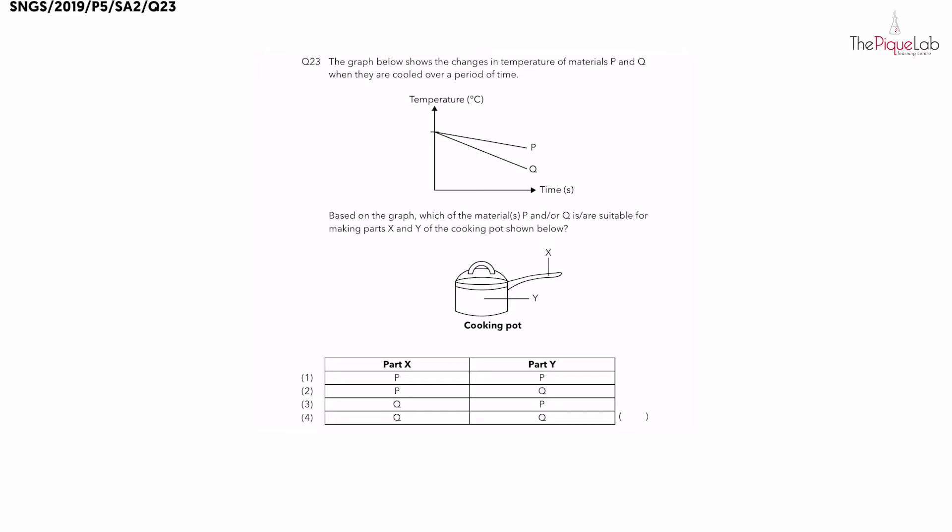Question 23: The graph below shows the changes in temperature of two materials P and Q over time. Since this question is about heat, the two materials mentioned can either be a good or poor conductor of heat. But we are comparing two materials here so we need to remember to use the correct comparison words. We have to use the word better and poorer conductors of heat.